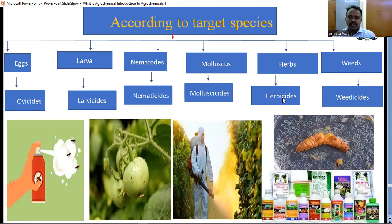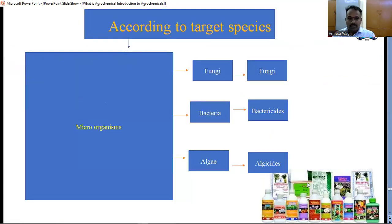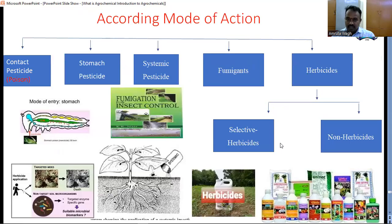In microorganisms, they contain bacteria, fungi, and algae — all are killed by respective agents. Fungi are killed by fungicides, bacteria by bactericides, etc. These are the classifications according to target species.